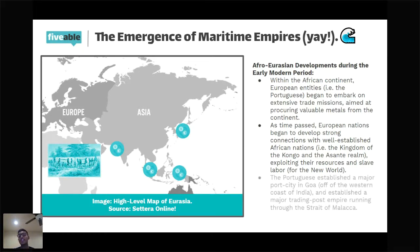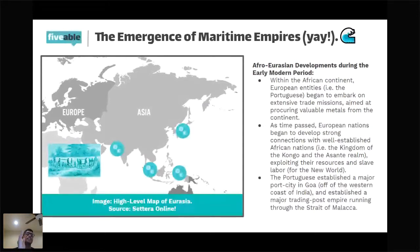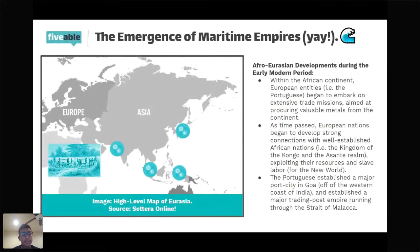The Portuguese also established a major port city in Goa off the western coast of India and established a major trading post empire running through the Strait of Malacca. The Dutch conducted major raids on Portuguese ships and trading posts, establishing themselves as a major trading superpower through their 'sea beggars' — essentially pirates who established Dutch territories next to Spanish and English holdings. England and France also developed trading posts in India, a predecessor to the British East India Company's later full conquest of India.